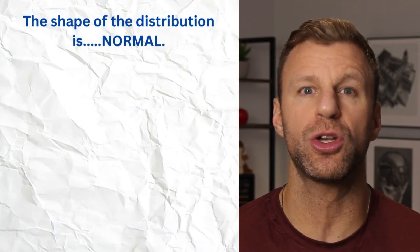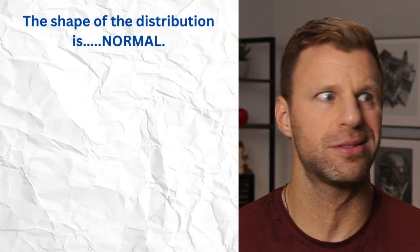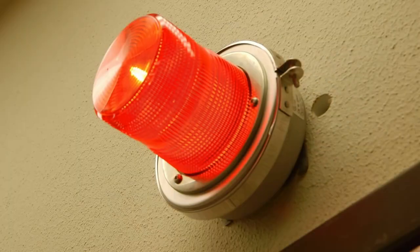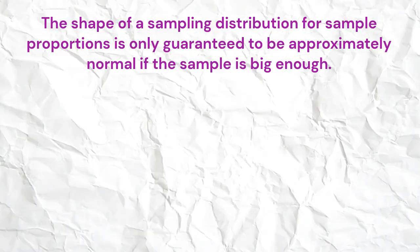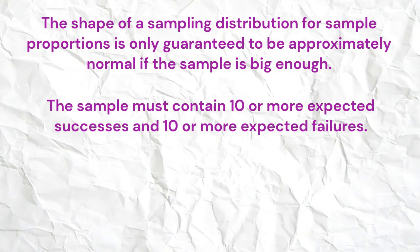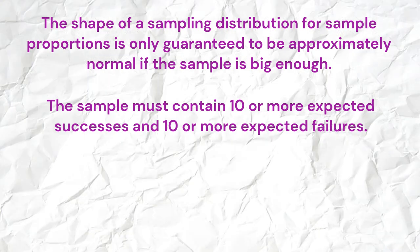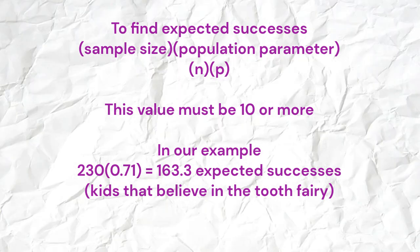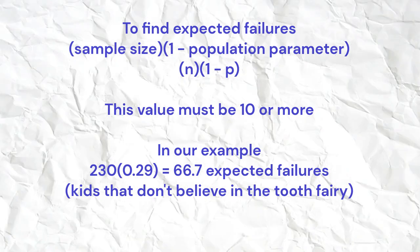The third feature is that the shape of the sampling distribution is going to be normal — but only if our sample is big enough. How do you know if your sample is big enough? We need 10 or more expected successes and 10 or more expected failures. Simply take your sample size n and multiply it by p for expected successes; take n times (1 minus p) for expected failures. As long as both are 10 or more, the sample is big enough for the shape to be normal.